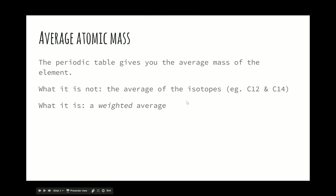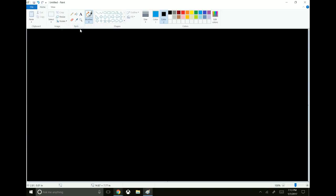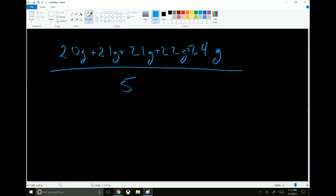So it's not just an average. The average of 12 and 14 would be 13, but the atomic mass that's shown on the periodic table is about 12. It's a weighted average. And a weighted average works like this. So say you have five apples weighing 20, 21, 21, 22, and 24 grams. You get the average by adding all of these together and then dividing by five. So this would be the average mass of those five apples.